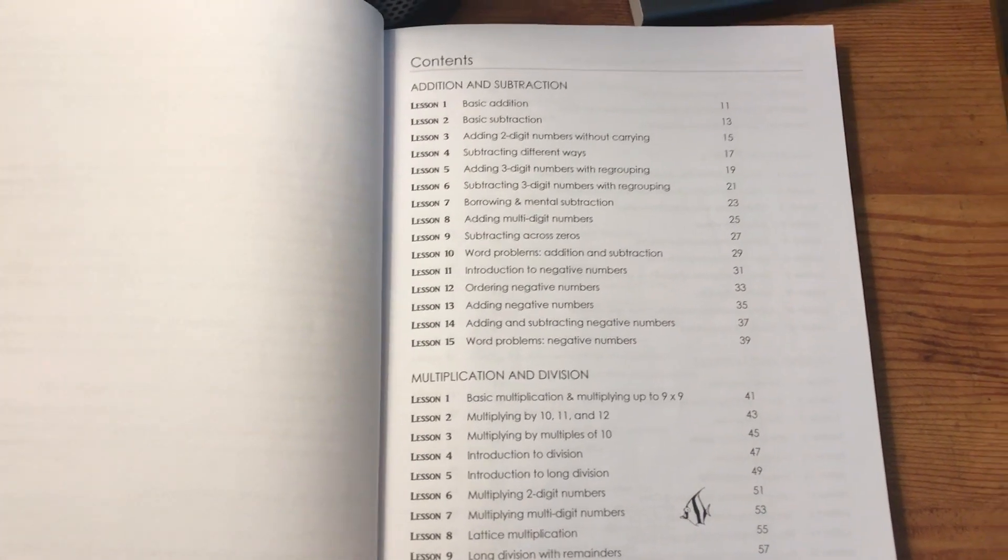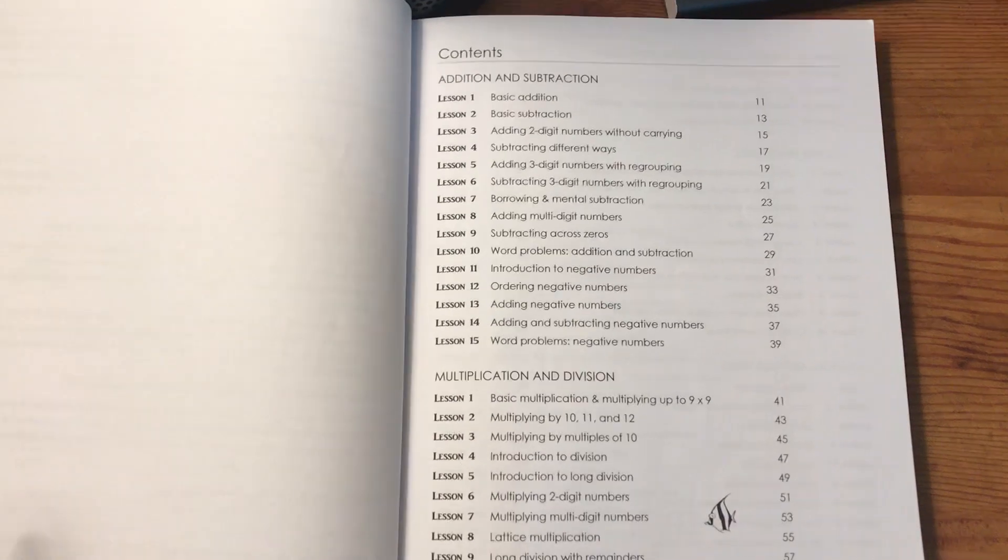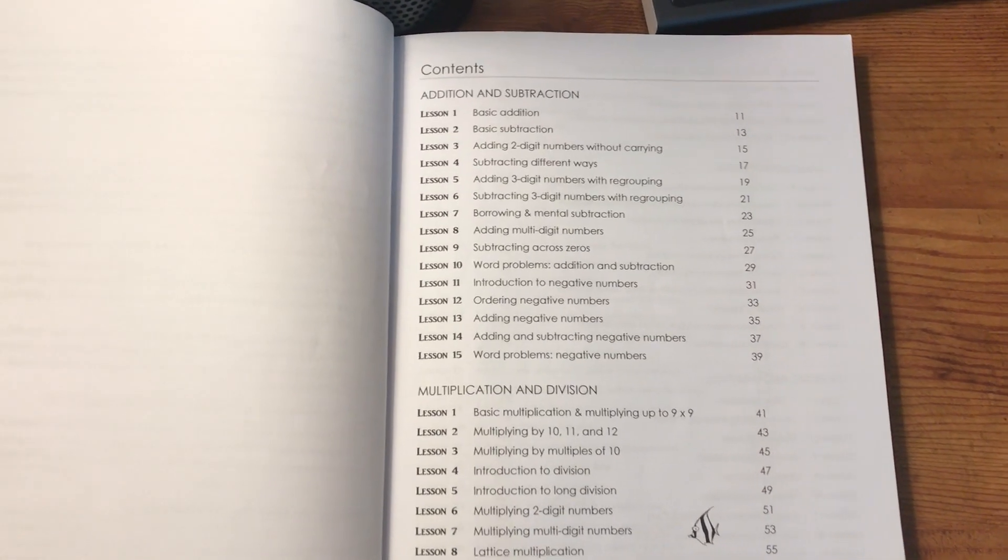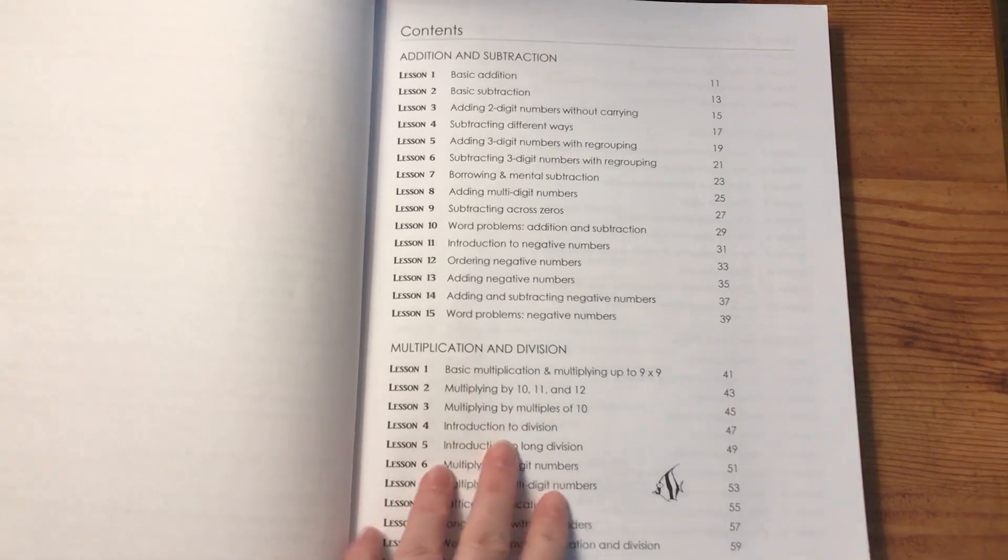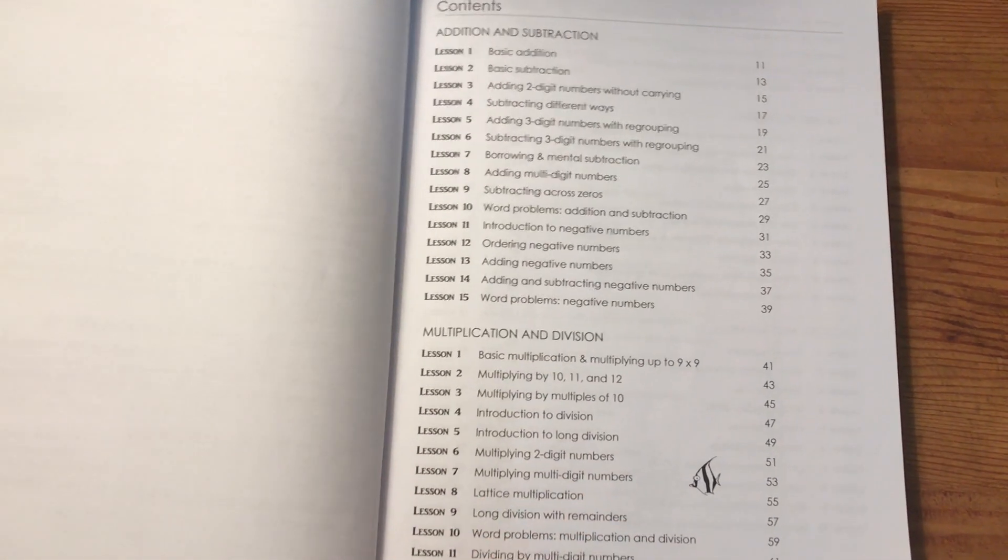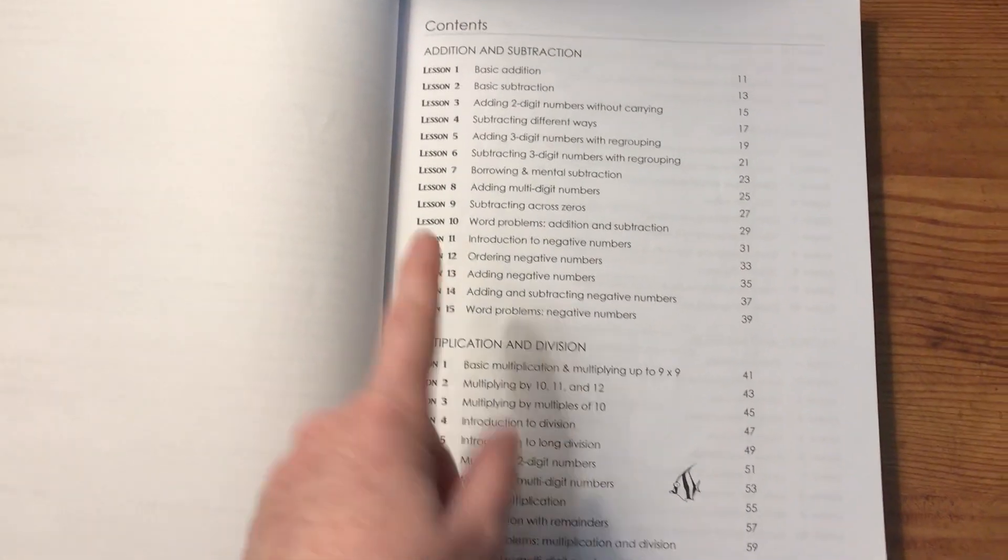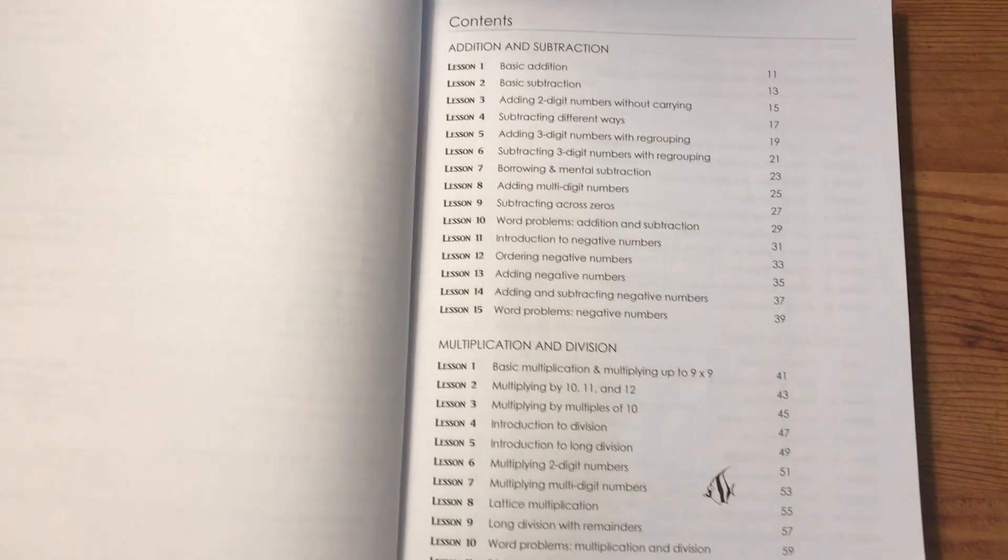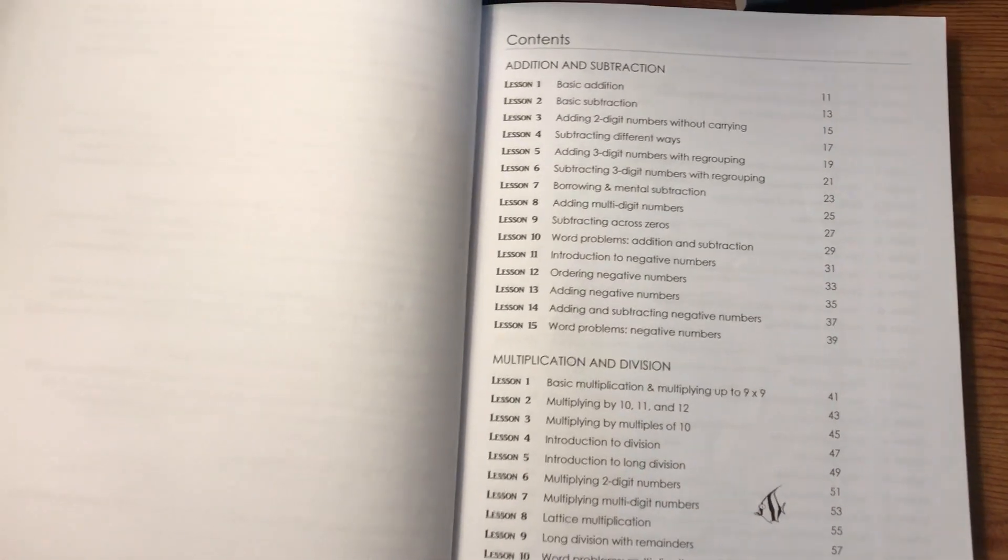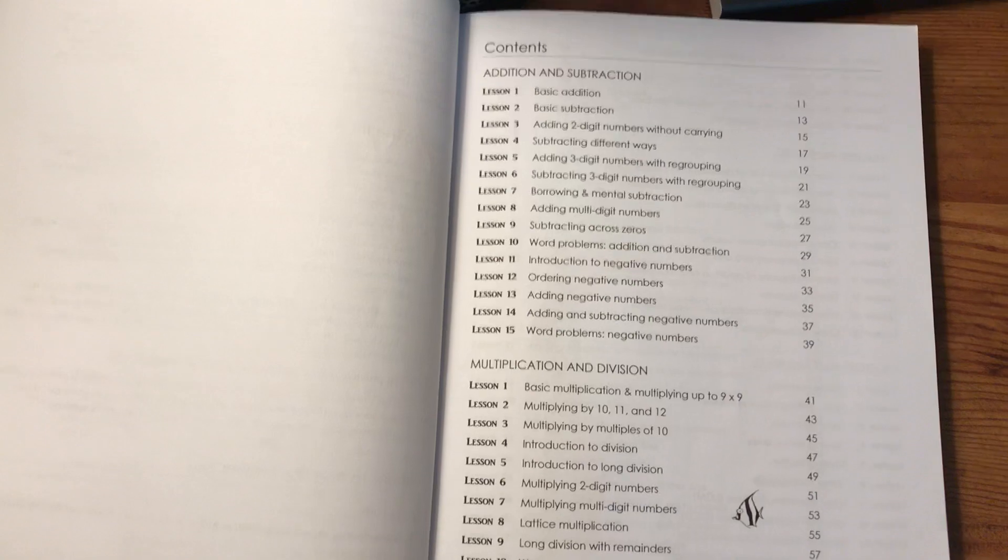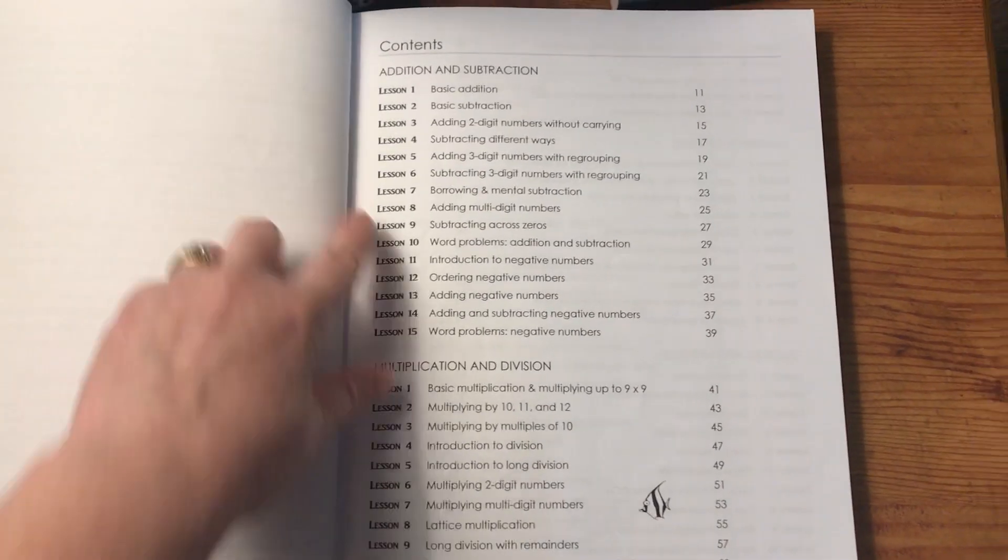The course online uses Khan Academy videos. So what I like to do if my daughter does happen to get stuck on one of these topics, I can go to the same lesson on the Easy Peasy website and pull up the Khan Academy video for it. Most of the time she does this without the Khan Academy videos. However, we have pulled that up a few times and that's been very helpful. These lessons match exactly with the Khan Academy. However, the workbook gives a lot more practice than the Khan Academy does. So if you have a student who needs a lot more practice, definitely get the workbook.